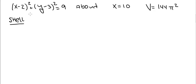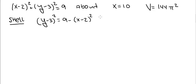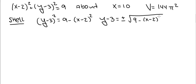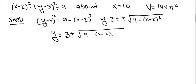First we are going to take this circle and solve it for y as a function of x. Now a circle is not a function, so we are going to have two functions: the upper semicircle and the lower semicircle. So y minus 3 squared equals 9 minus x minus 2 squared. Taking the square root of both sides, on the left we get y minus 3, and on the right we get plus or minus the square root of 9 minus x minus 2 squared. So y is equal to 3 plus or minus the square root of 9 minus x minus 2 squared. The plus is the upper semicircle; the minus is the lower semicircle.